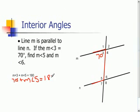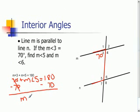So to solve for the measure of angle 5, you would simply subtract 70 degrees from both sides. And we are left with the measure of angle 5 equal to 180 minus 70, which is 110 degrees. So we now know the measure of angle 5 is 110 degrees.